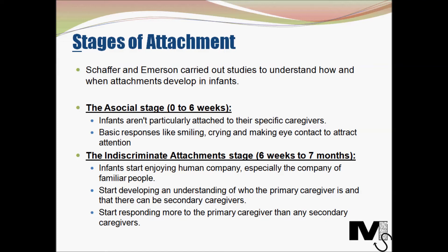The next stage is the indiscriminate attachments stage, occurring between six weeks to seven months. In this stage infants start enjoying human company, especially the company of familiar people. They start developing an understanding of who the primary caregiver is and that there can be secondary caregivers in addition to the primary caregiver. They also develop trust that their primary caregiver will respond to their needs and hence start responding more to them than to any secondary caregiver.